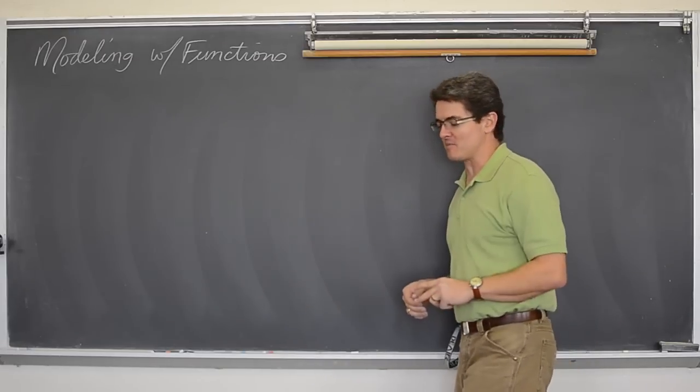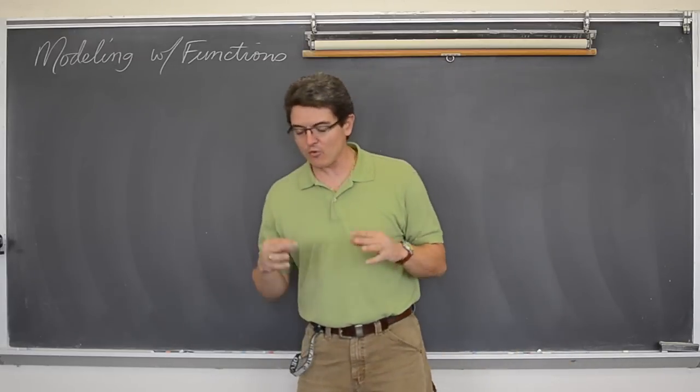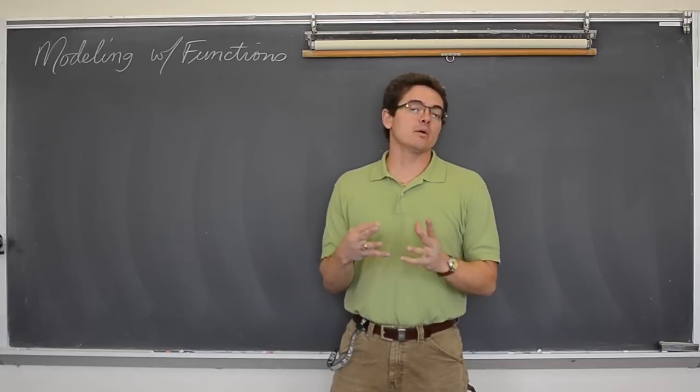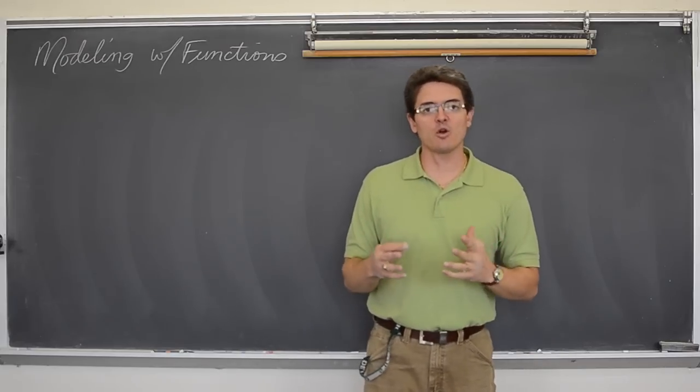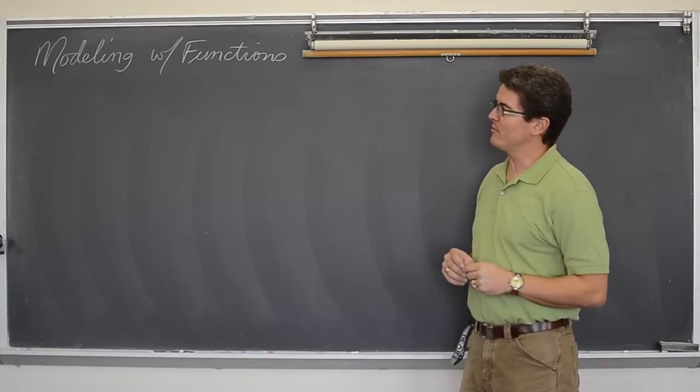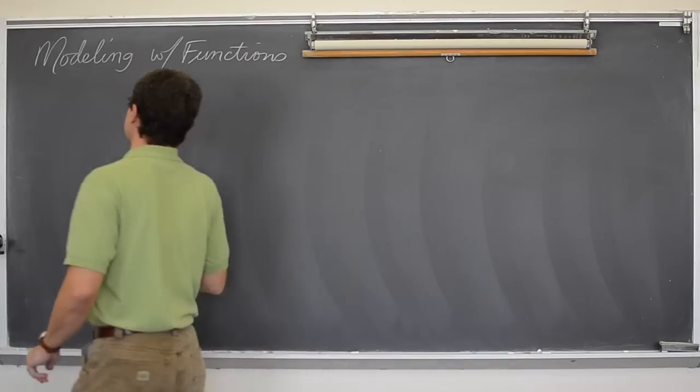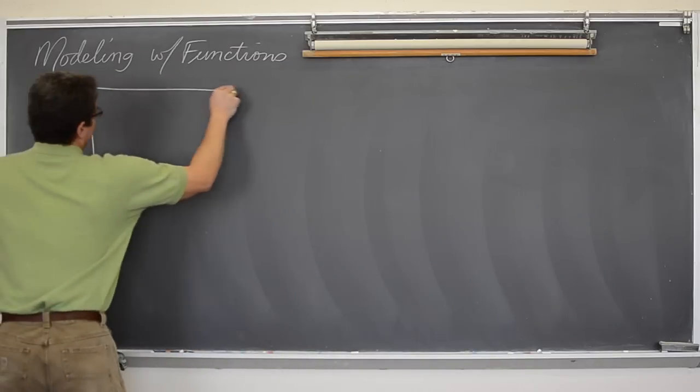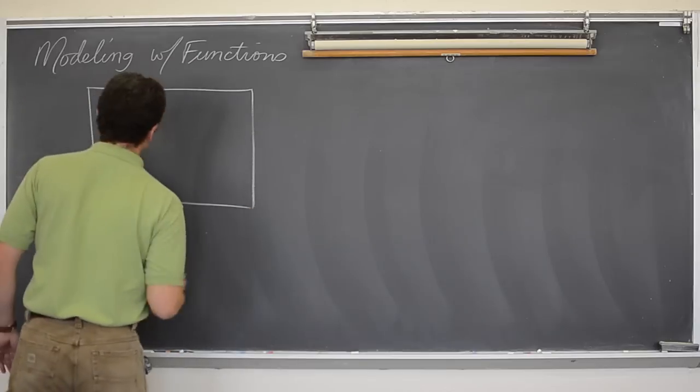I want to do two area problems where I'm going to relate the perimeter of the object to the area inside and show you how you can make a formula that relates those two and so you have an equation with one variable. So let's take a look at the area of a rectangle.